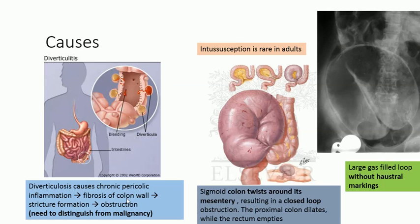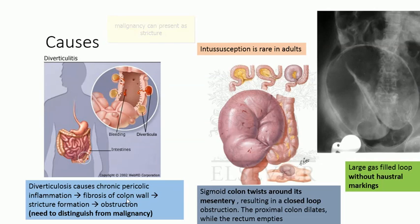One form of malignancy is stricture formation. Intussusception is rare in adults, but in children intussusception is one of the main causes of large bowel obstruction, but not in adults.